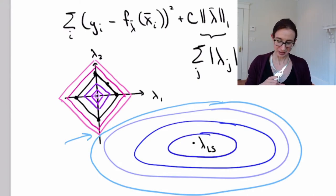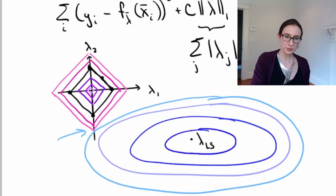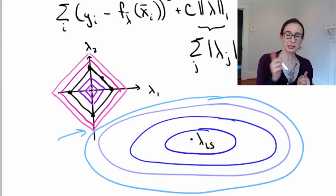And what happens then is that the solution you end up with to try to minimize the combination of these two terms ends up being sparse because if you're right on that axis there, well, look over here, that means lambda one is zero.